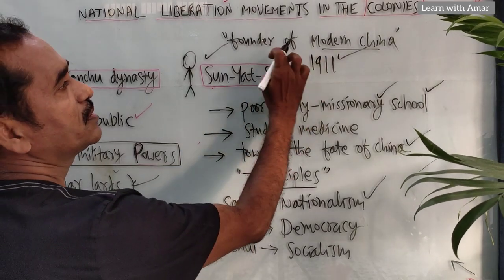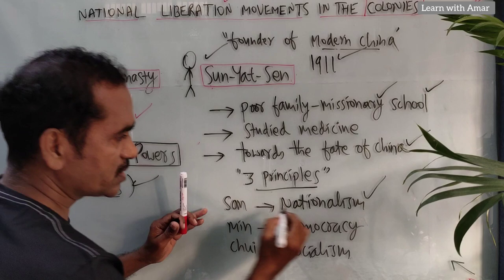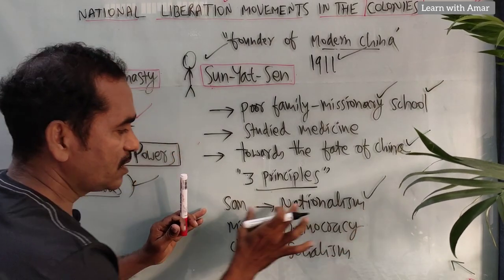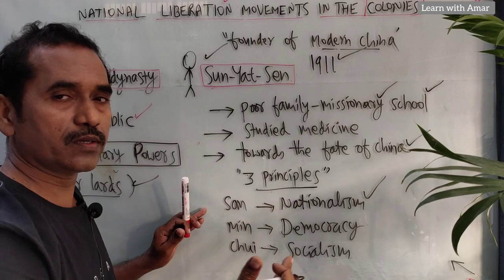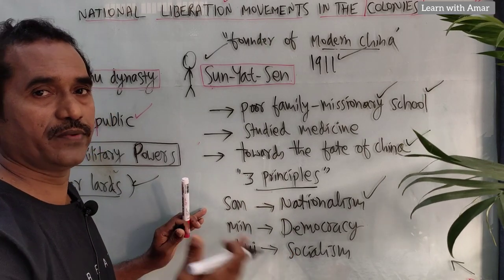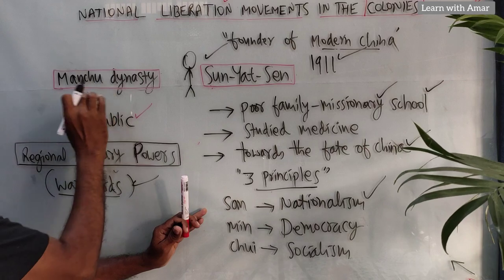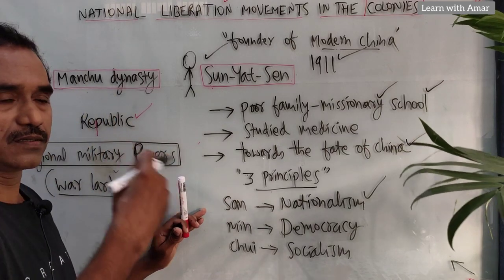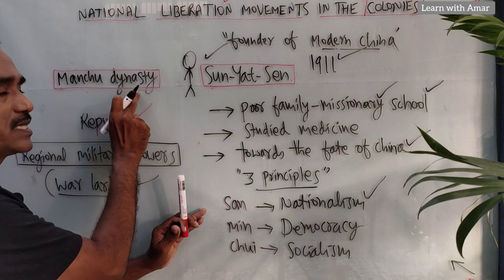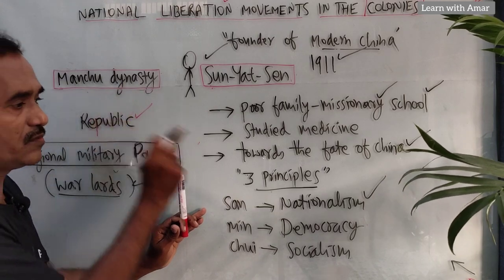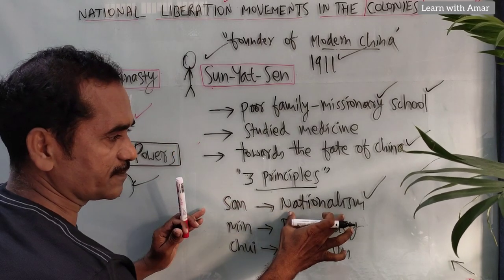That is the reason why we call him the founder of modern China. Under Nationalism, he wanted to throw out the foreigners and even the Manchu dynasty, because Manchu dynasty did not save the interests of China. He wanted to throw away the Manchu dynasty and foreigners — that is Nationalism. They must be united.